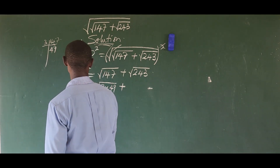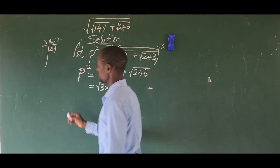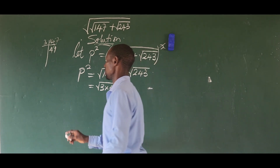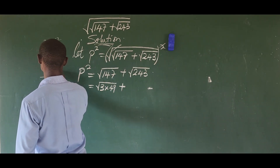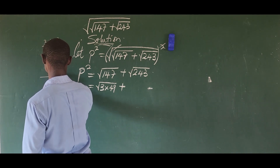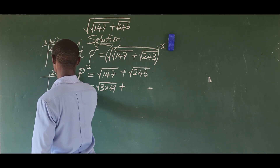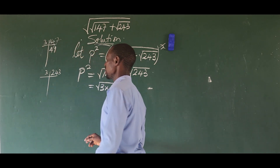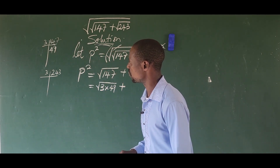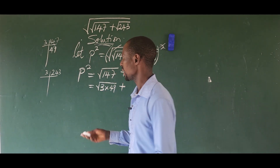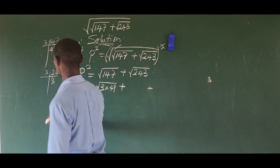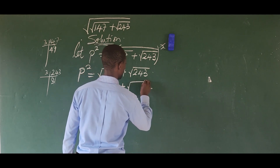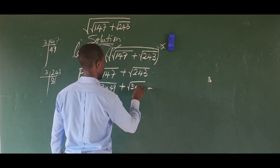We do the same thing to 243. Two cannot go into this, but three can. Three into 243: 3 into 24 gives 8, and 3 into 3 gives 1, so 243 splits into 3 times 81.